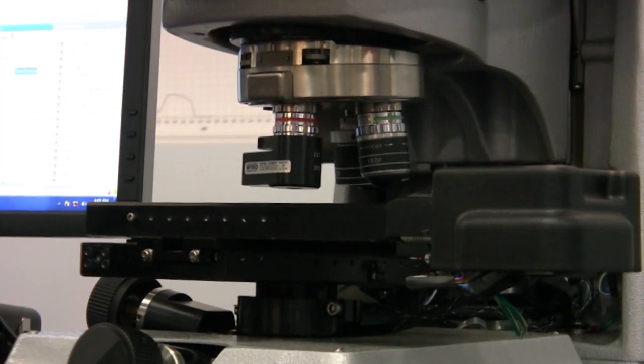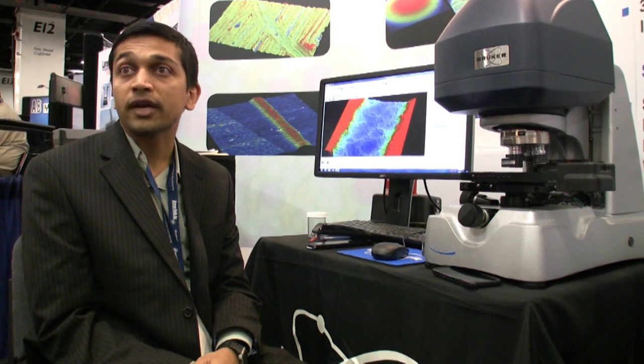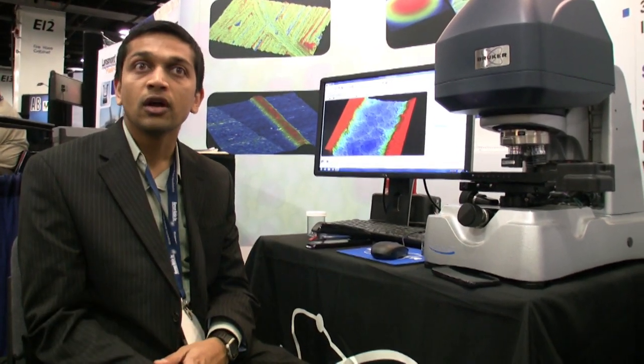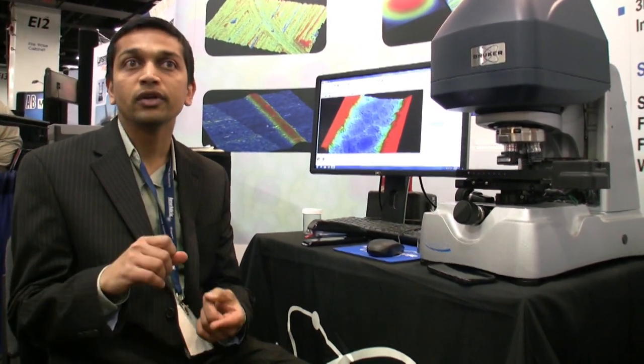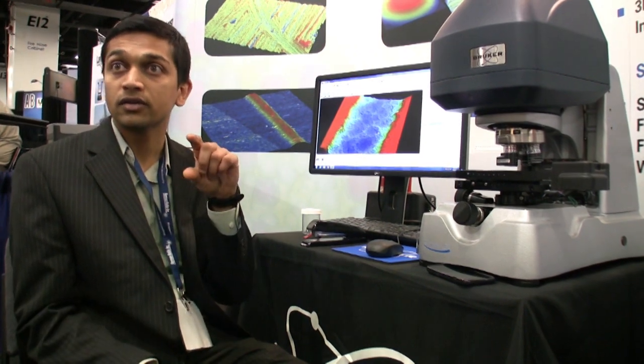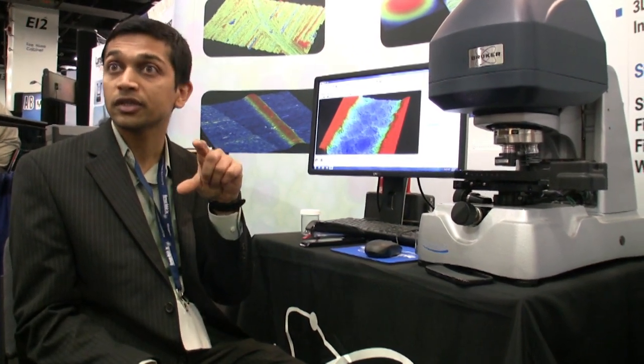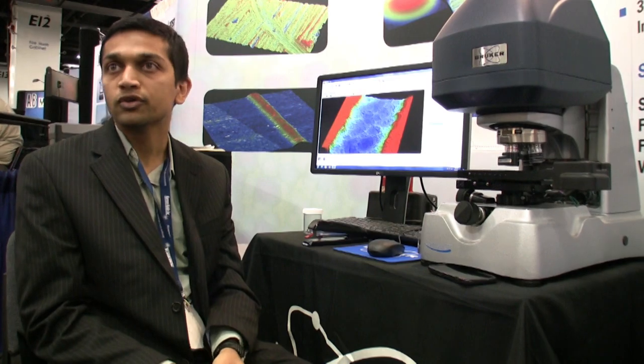You can use it anywhere from measuring texture on medical optics - super smooth surfaces - to something as rough as a tire, like carbon black on a tire. So anywhere where you need to do very accurate dimensional measurements in the Z direction and the XY direction, you can use this.